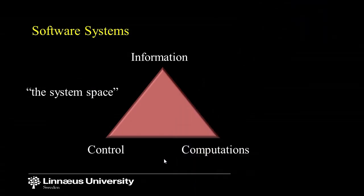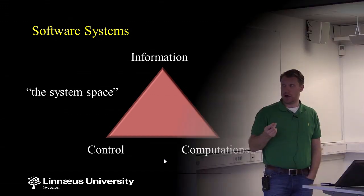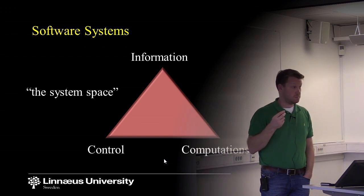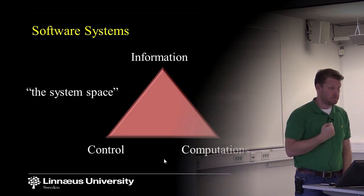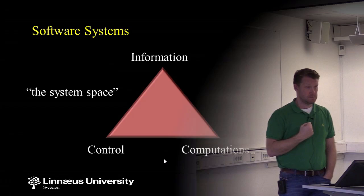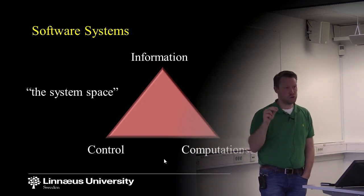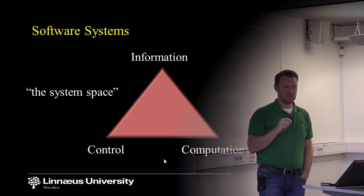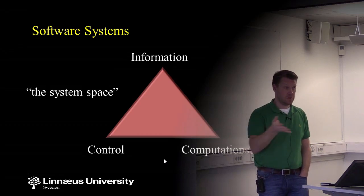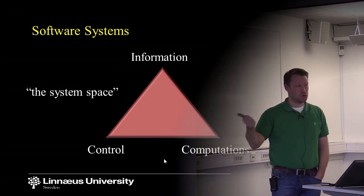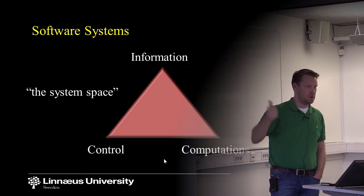This leads us to models of software systems. If you look at a software system, it's a combination of three things: information, computations on that information, and control that controls the computations — which computations should be performed, when, and how. So we have control that controls the computations on information.